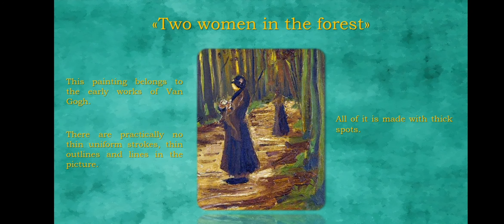This painting belongs to the early works of Van Gogh. It is made in dark colors, conveying darkness, danger and loneliness. Women seem to be an integral part of the scene, lost in the leaves.